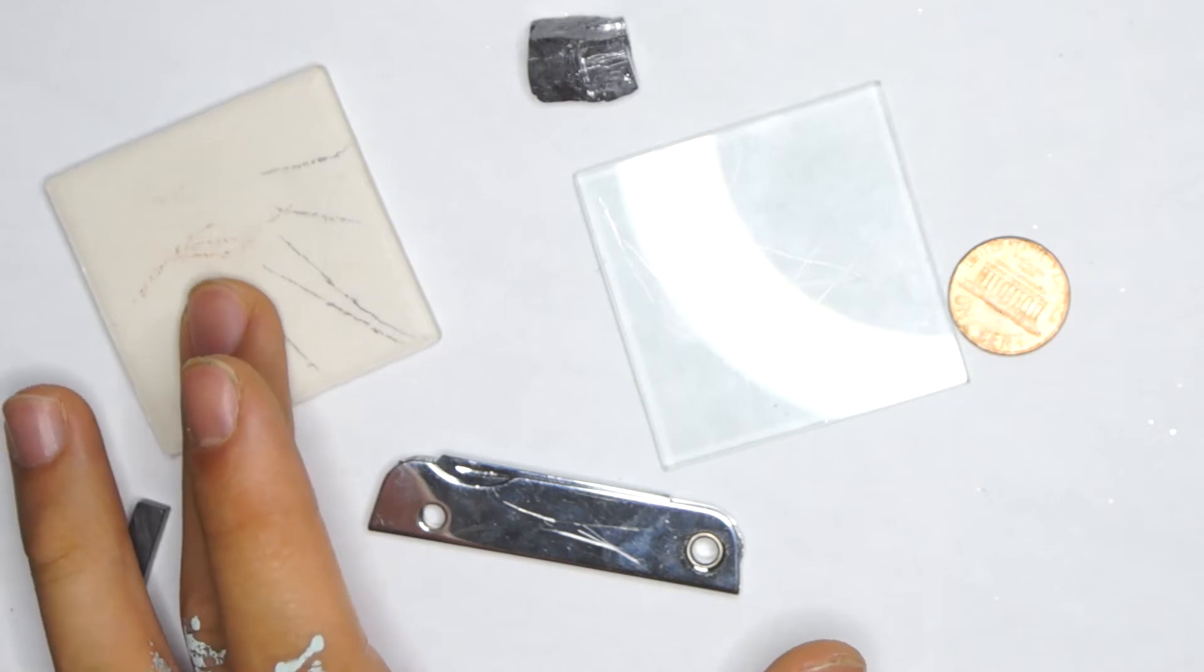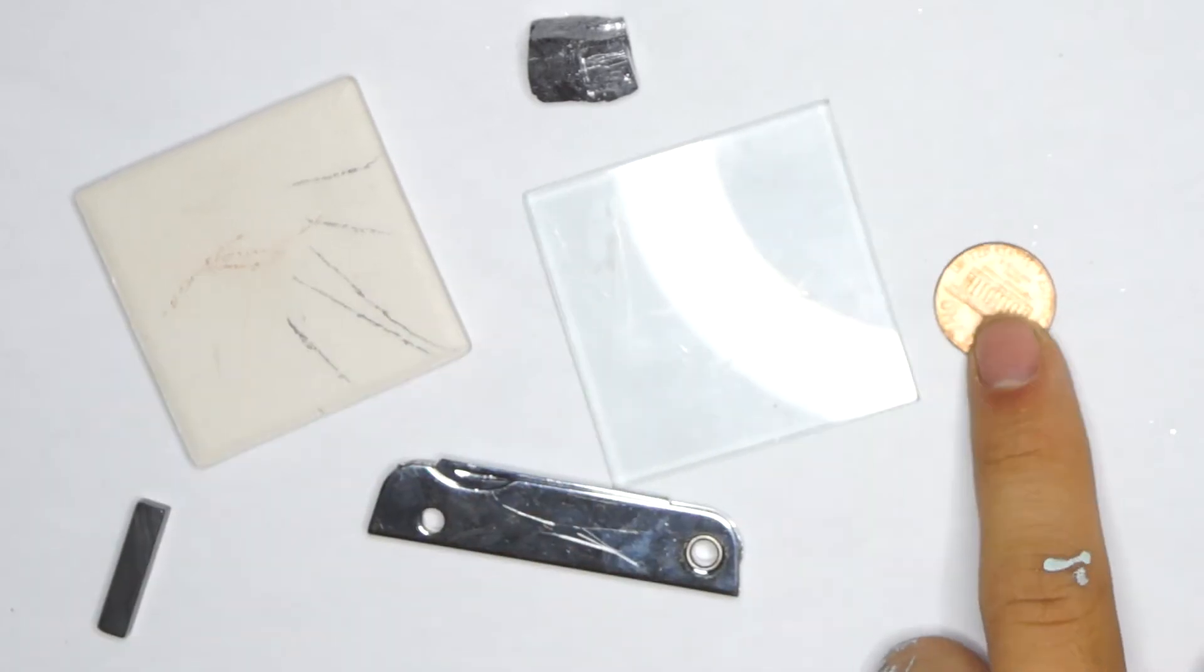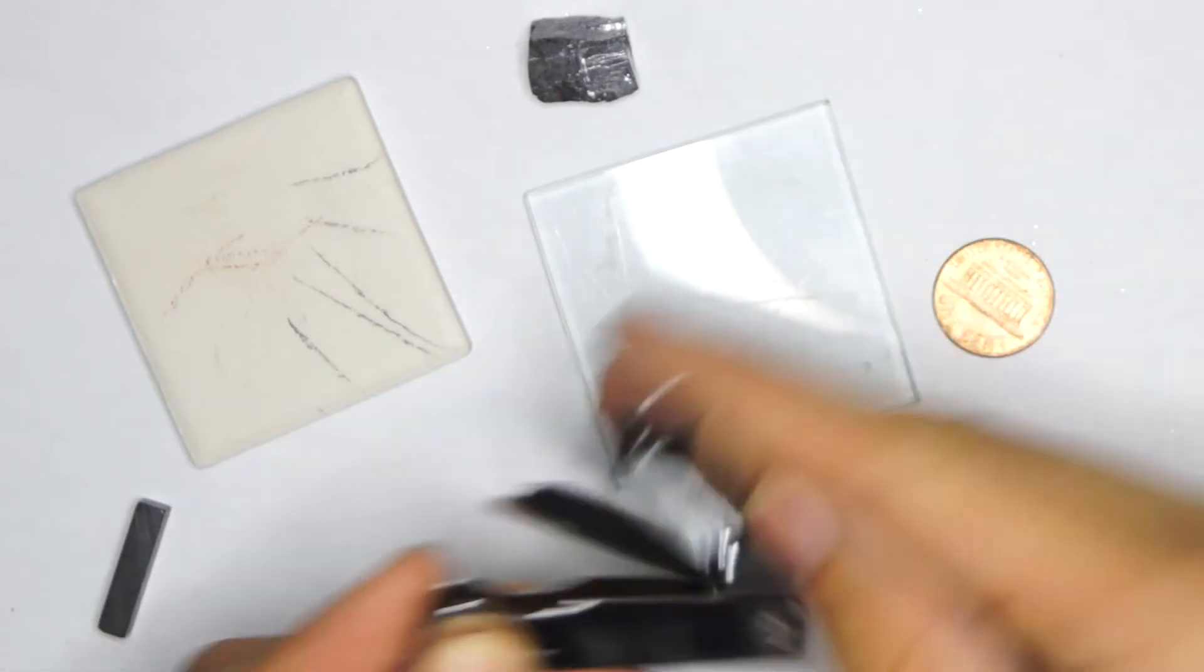This is your streak plate, also called a ceramic plate. This is your glass plate. This is a penny. And here's your knife. You can fold that out. It has a file and a knife.